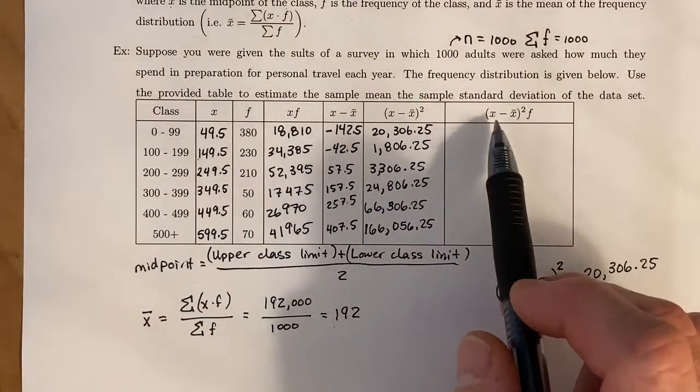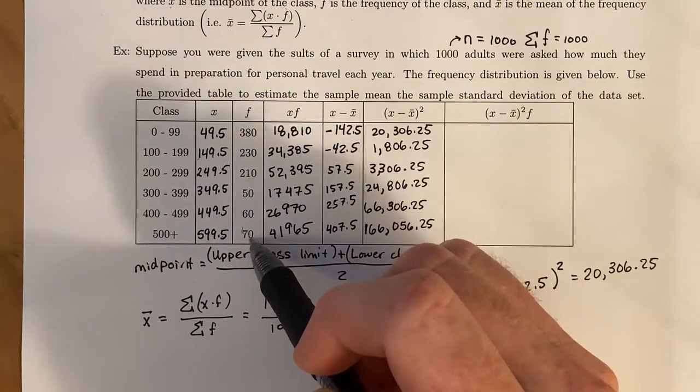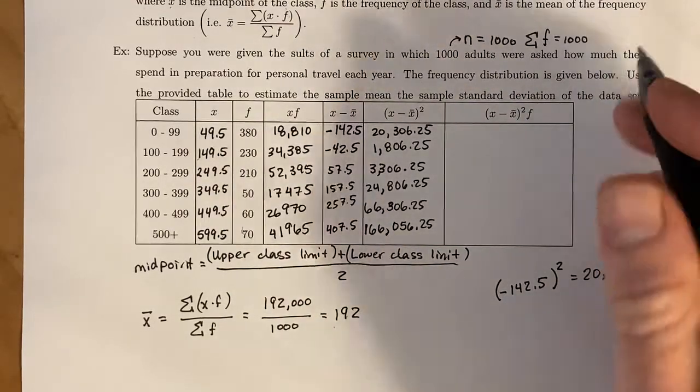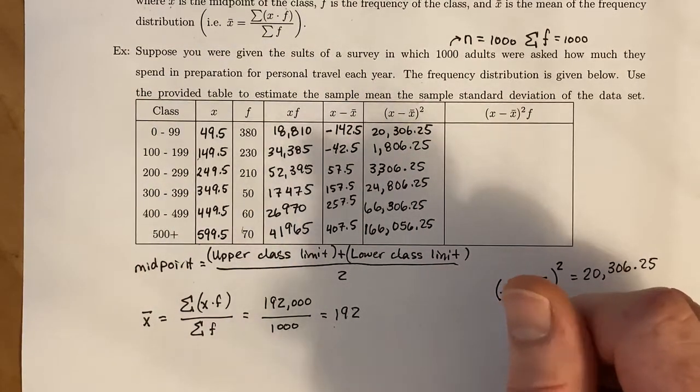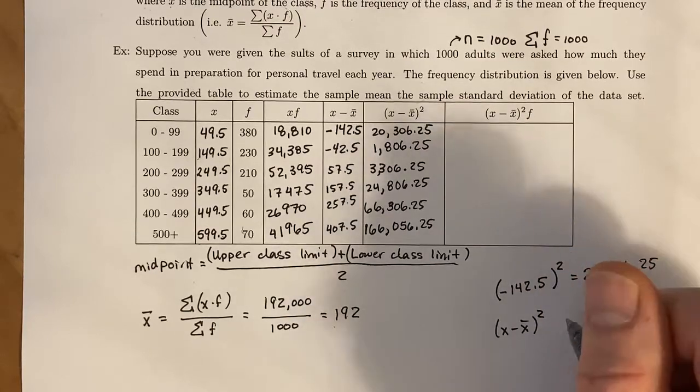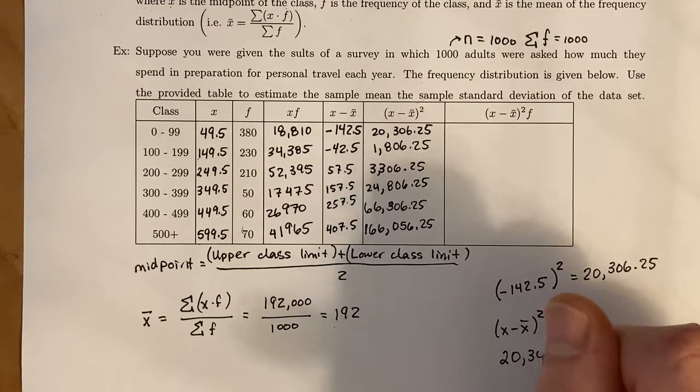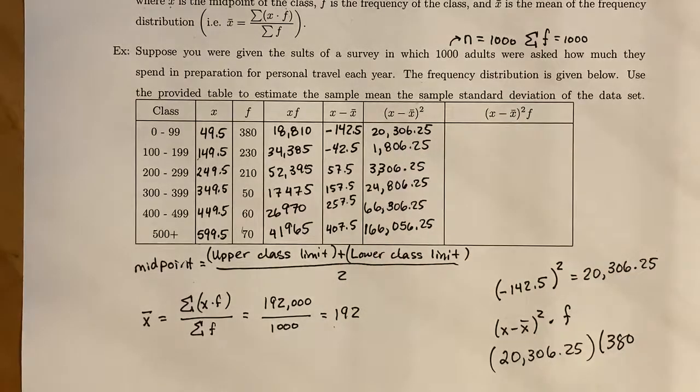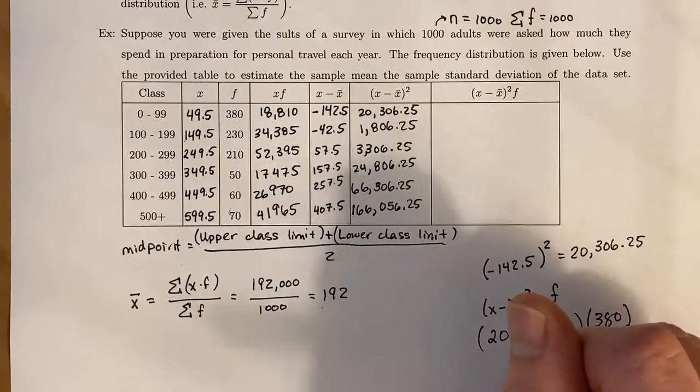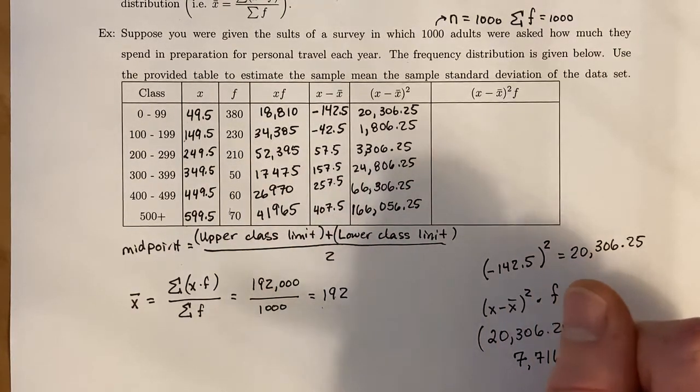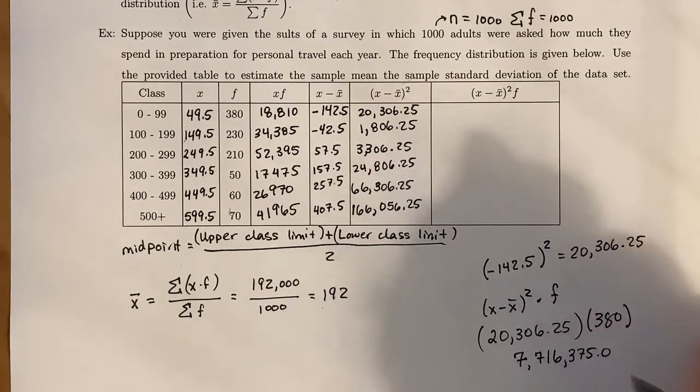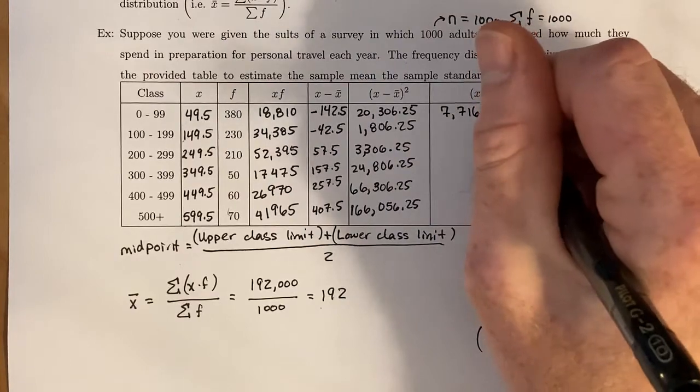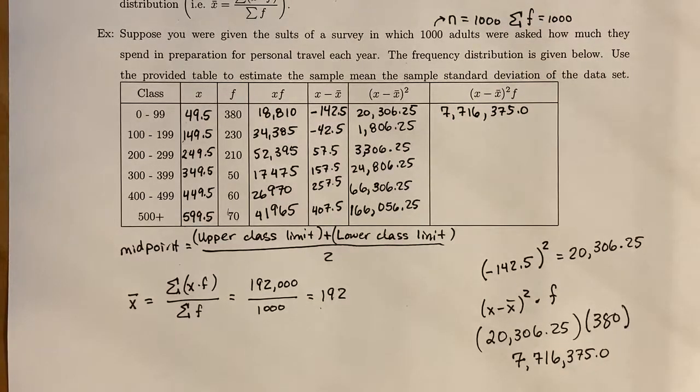For this final column, we take the frequency of that class times the deviation squared. For the first one, we take X minus X-bar squared, which for us is 20,306.25, and multiply it by the frequency, so that's 380. When you do that, you end up getting 7,716,375.0, which is kind of nice. And that goes right here. You'll do that for each and every one of those classes.